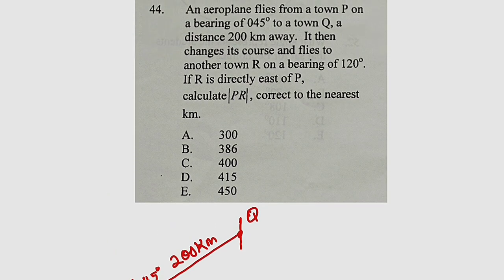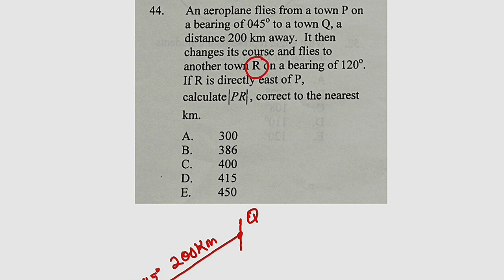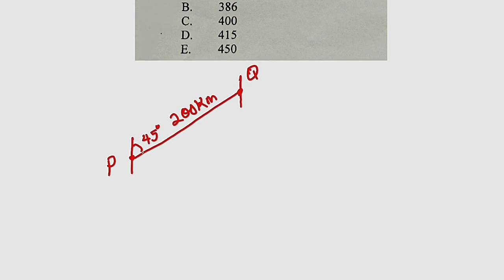And from Q, the plane travels to another town R on a bearing of 120 degrees. And according to the question, town R is directly east of P. So where is east of P?